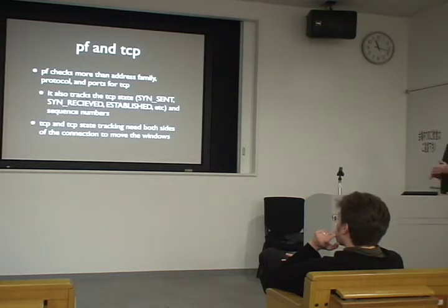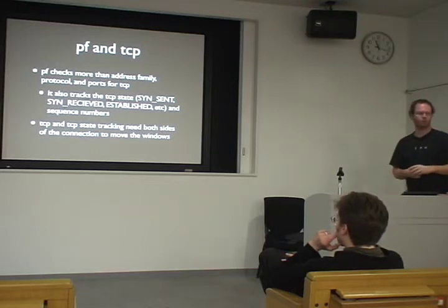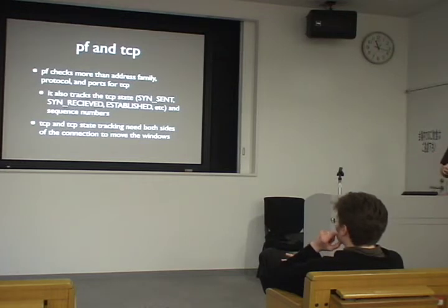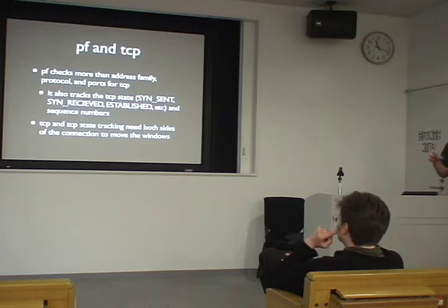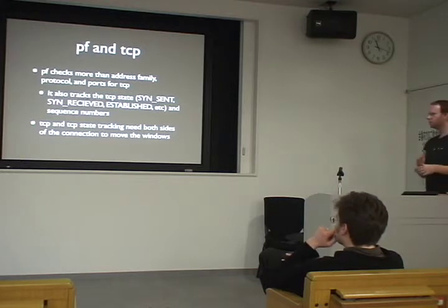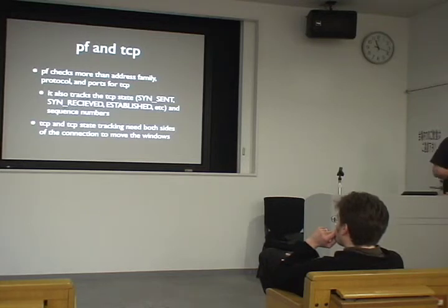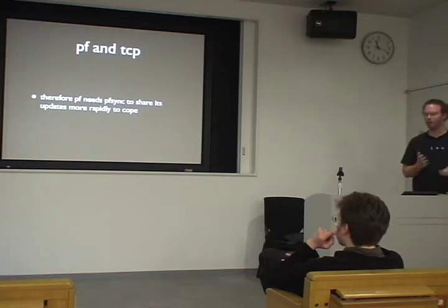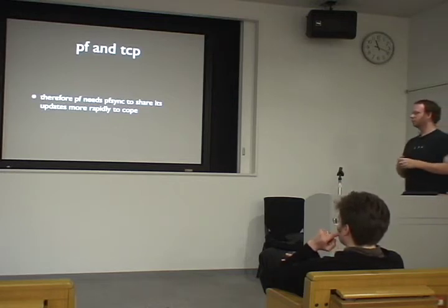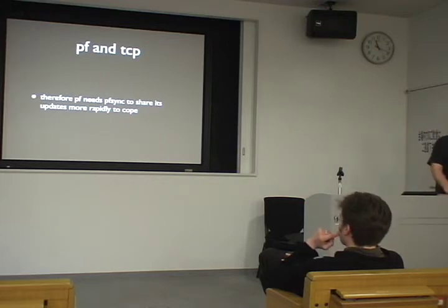PF checks more than address family, protocol, and ports for TCP — it also checks the TCP state: whether you're opening the connection, whether it's established or closed, and the sequence numbers within those states. TCP packets have to be within a certain window. As PF sees them, it updates the expected window values. Both firewalls need to know the exact same information to deal with traffic in a timely fashion. PFSync's one-second mitigation delay is just too slow. The obvious solution is to make PFSync share its updates more rapidly.